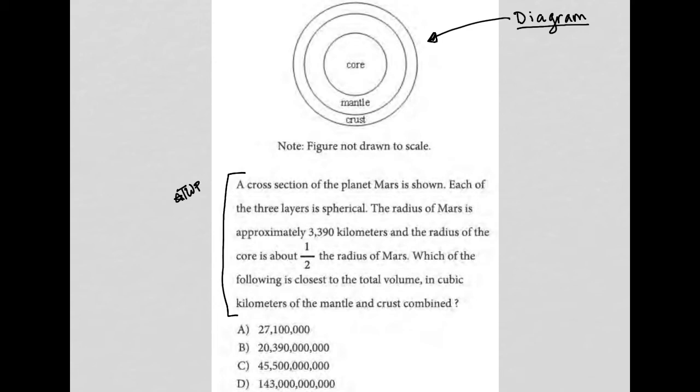The question says a cross-section of the planet Mars is shown. We see the core in the middle, the mantle next, followed by the crust. Each of the three layers is spherical, so it's not just a circle as we see visually, but it's actually a sphere that we're cutting through.